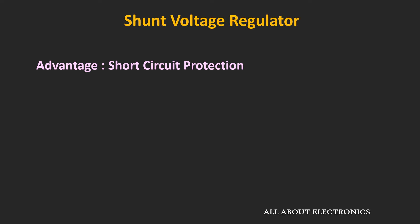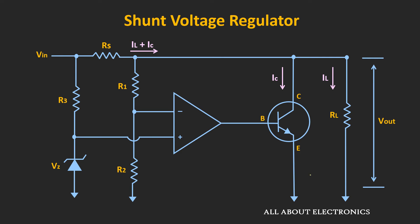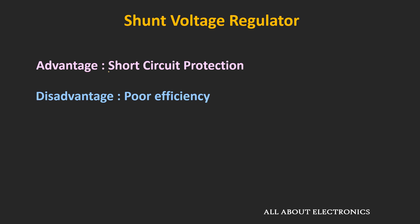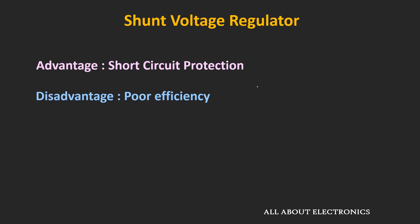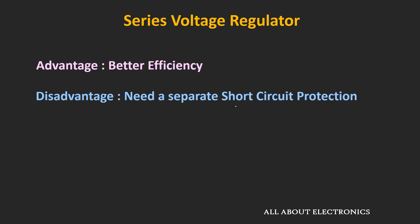One of the main advantages of this shunt regulator is its inbuilt short circuit protection. Even if we short the load terminals in the worst case, no component in the shunt regulator will get damaged, and the maximum current is restricted by the series resistor. However, the efficiency of this shunt voltage regulator is very poor — typically in the range of 20–30% — due to large power loss across the series resistor and the shunt transistor. On the other hand, the series voltage regulator provides good efficiency, but unlike the shunt regulator, it needs separate short circuit protection.